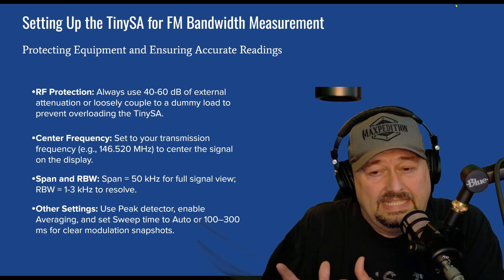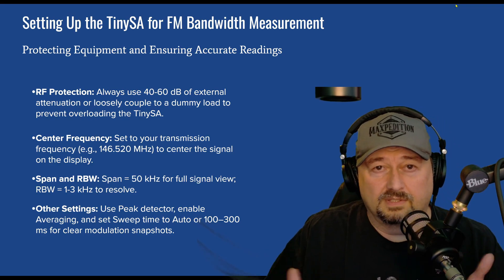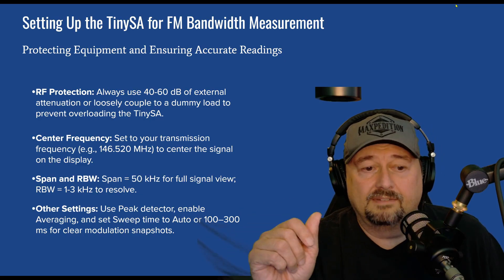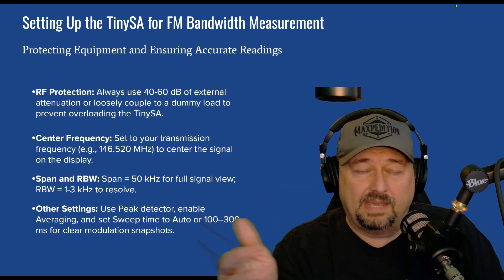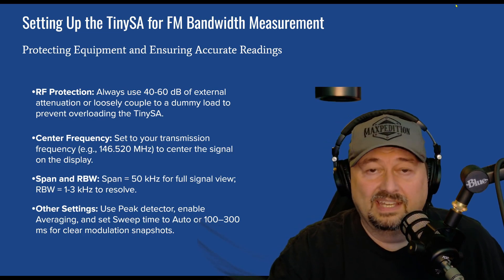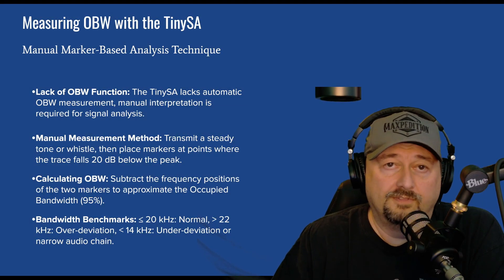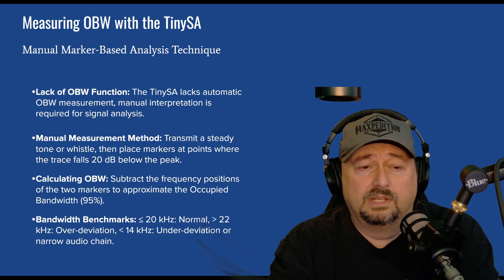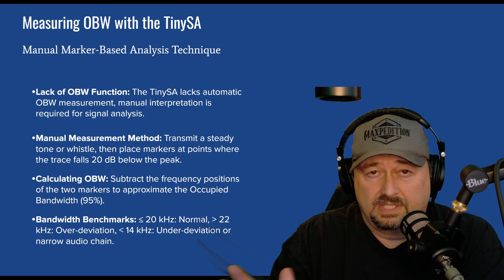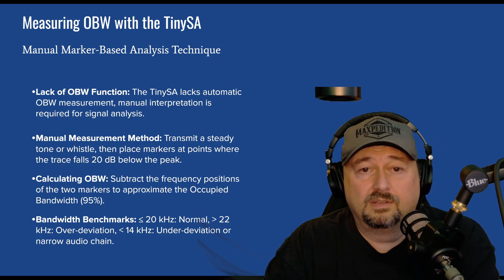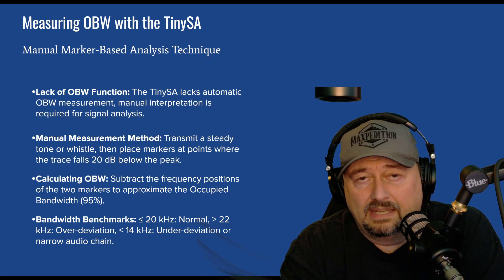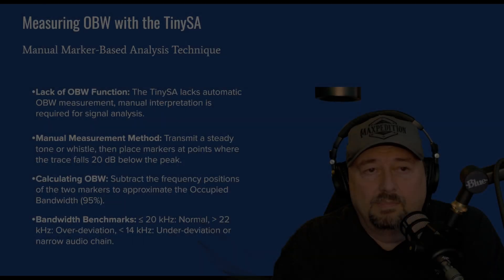We're going to make sure our span is accurate — spanning around 52 kilohertz though my math isn't perfect. You can use peak detection by putting a marker on your audible peaks, and you can also set up averaging so that when you unkey or there are signal fluctuations, it holds those peaks a little longer. We're just going to keep the key down, so we should be fine. The TinySA doesn't have a dedicated OBW function for occupied bandwidth, so there are a couple of options: you can use manual measurement tools — transmit a sound, whistle into your microphone — and place markers at different points, though this isn't the most accurate approach.